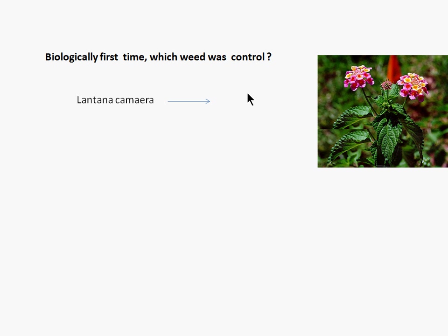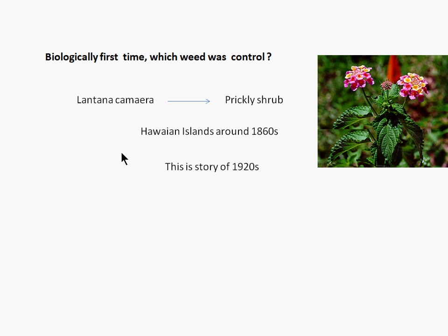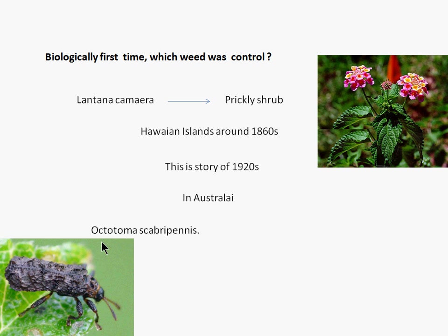The next question: which weed was first biologically controlled? Your answer is Lantana camara. This is a prickly shrub that was first introduced as an ornamental plant in Hawaiian Islands around the 16th to 18th century. But it became a weed and spread widely in cropped and non-cropped areas. Even in India it was introduced as an ornamental plant. In the 19th to 20th century it was first time biologically tried to be controlled. In Australia, it is controlled by two beetles: Octotoma scabripennis and Euplatypus giardi. These two beetles have been used in Australia for the control of Lantana camara.